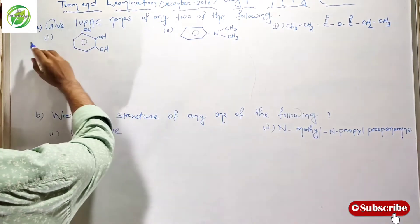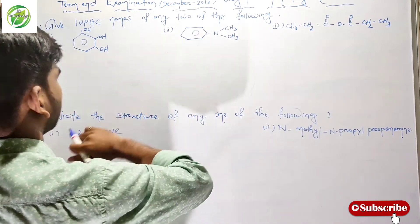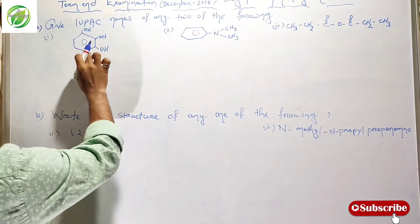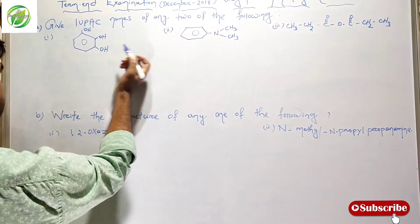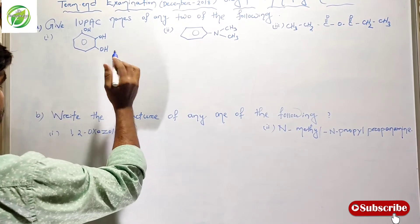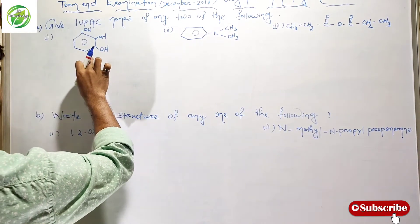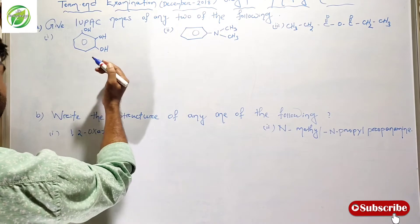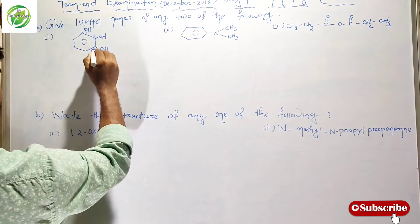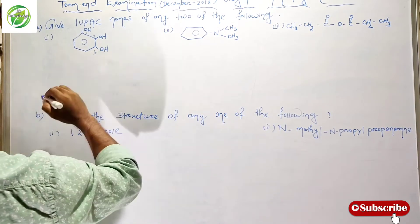This is question number 1a — I will place the name of any two of the following. If you see this, there is a benzene ring and 3 OH groups present. When an OH group joins a benzene ring, we say this is a phenol group. So first we start numbering: 1, 2, 3. At positions 2 and 3, the OH group is present.